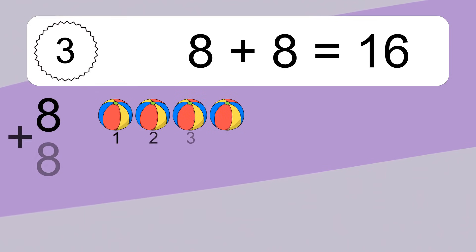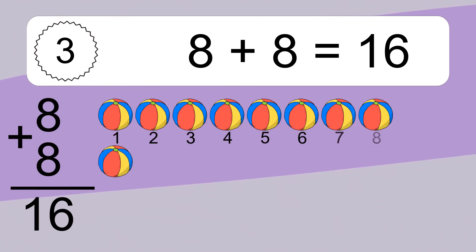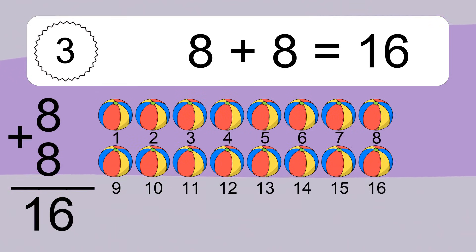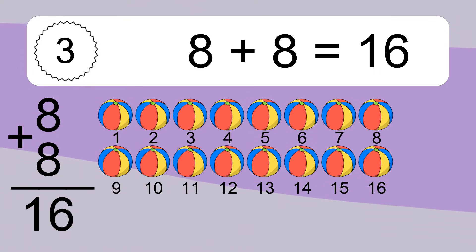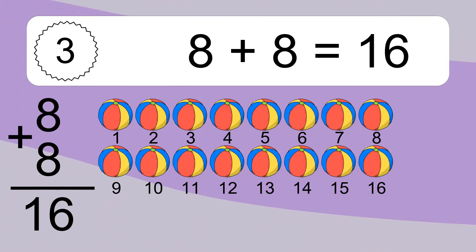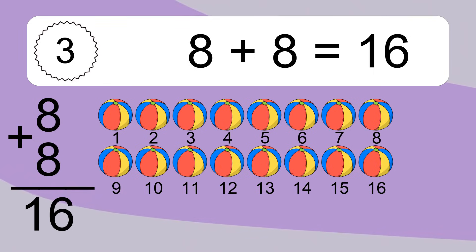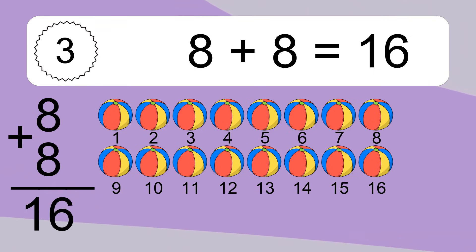Eight plus eight equals what? Eight plus eight equals sixteen. Let's count it: one, two, three, four, five, six, seven, eight, nine, ten, eleven, twelve, thirteen, fourteen, fifteen, sixteen.